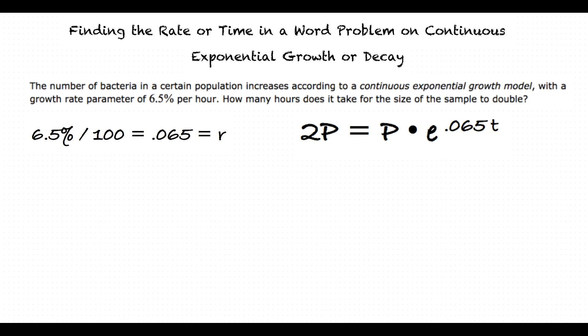Since there is a P on both sides of the equation, we can divide both sides by P to reduce the equation to a single variable, right? Exactly. Dividing both sides by P results in 2 equals e raised to the .065t.